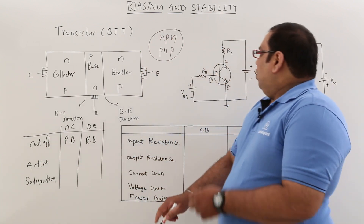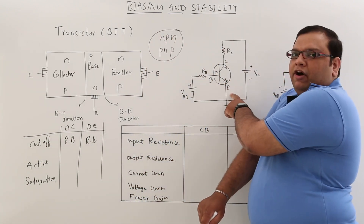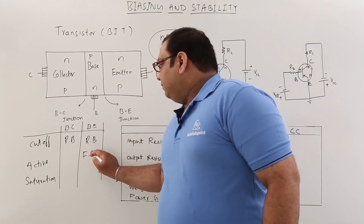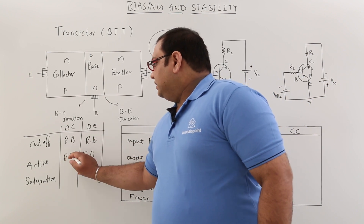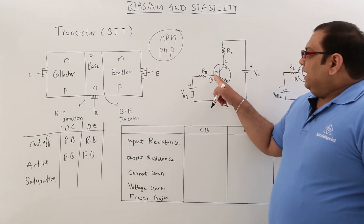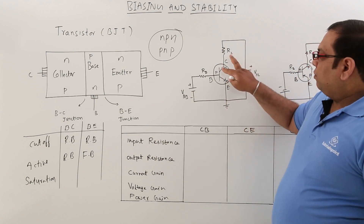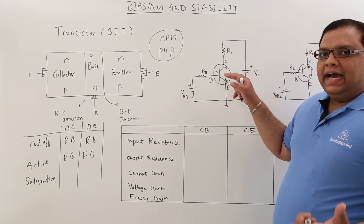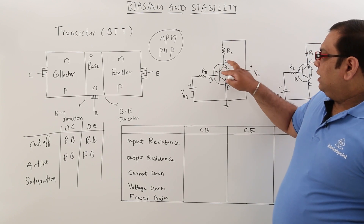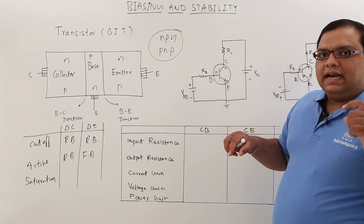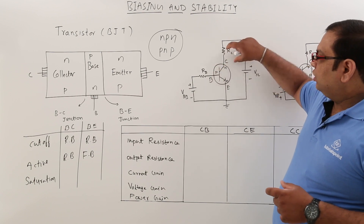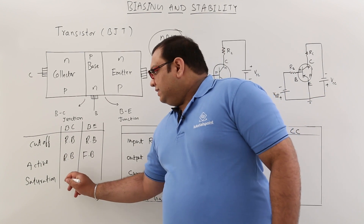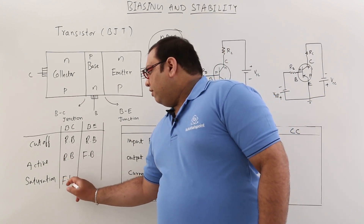In the active region, the base-emitter junction is forward biased while the base-collector junction is reverse biased. The input side has very low resistance because it is forward biased, but the output junction has very high resistance because it is reverse biased. This transmission from lower resistance to higher resistance is the origin of the name 'transistor.' The output is taken in the active region for amplification.